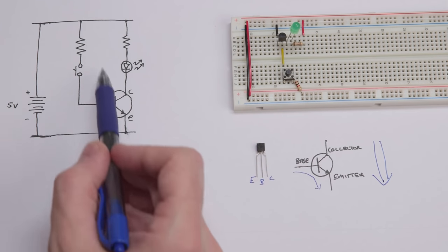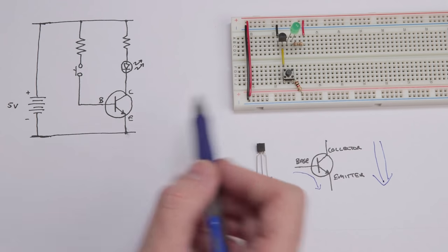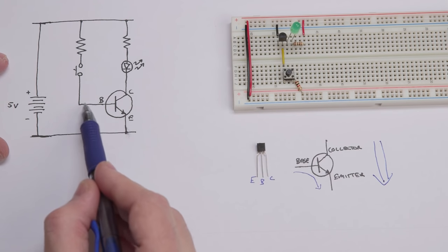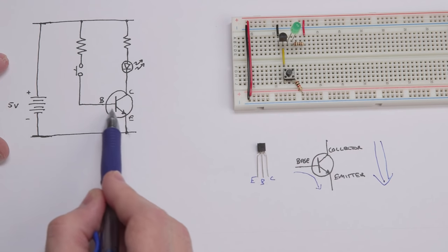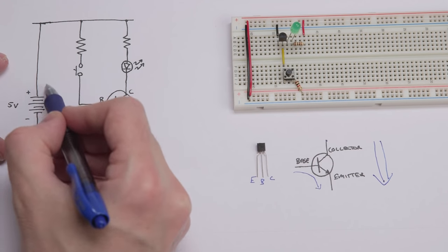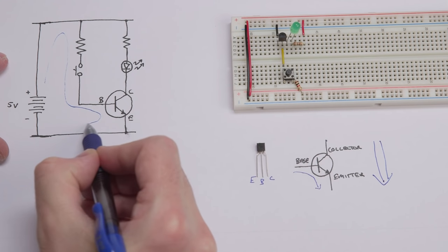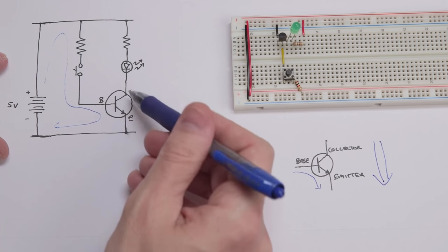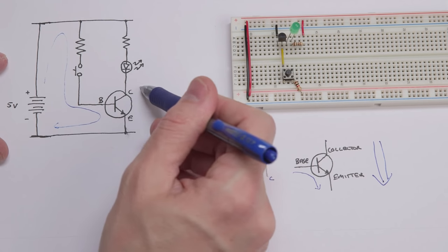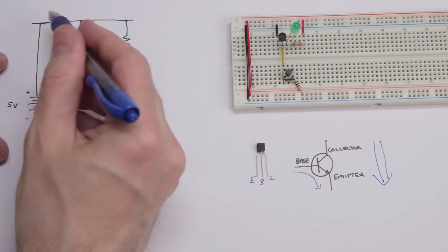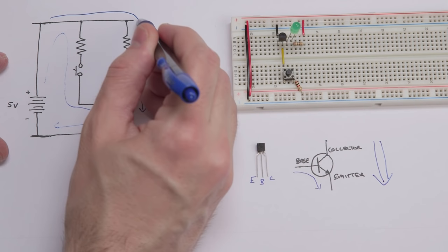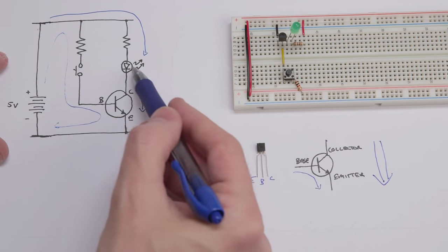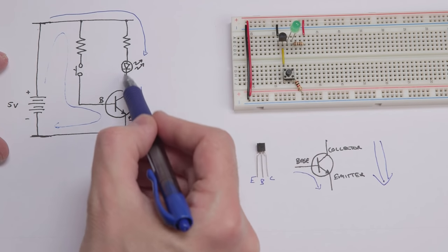So what we can do with that is something like this circuit we've got set up over here. Basically, this circuit has a switch that allows current to flow from the base to the emitter. If we close this switch and push this button, that establishes a circuit and causes current to flow from the base to the emitter, which turns the transistor on. Once the transistor is turned on, current is allowed to flow from the collector to the emitter. That allows this second part of the circuit to work, where current flows from the battery through this resistor, through this LED, which will turn on and light up, and then through the transistor.